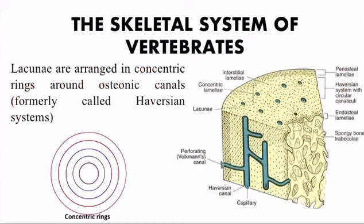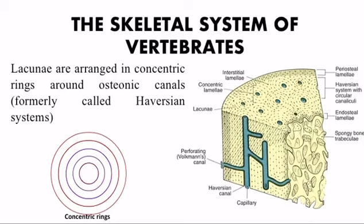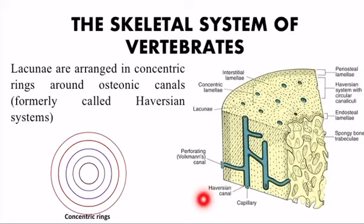Lacunae are arranged in concentric rings — a concentric ring being a ring with a common center. Lacunae are arranged in concentric rings around osteonic canals. Here you can see the lacunae arranged in concentric rings around the canal, which is named the osteonic canal, also called the central canal or Haversian canal. This system was formally named the Haversian system.